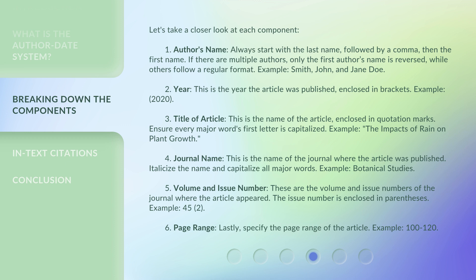4. Journal name: This is the name of the journal where the article was published. 5. Volume and issue numbers: These are the volume and issue numbers of the journal where the article appeared. The issue number is enclosed in parentheses. Example: 45, 2. 6. Page range: Lastly, specify the page range of the article. Example: 100–120.